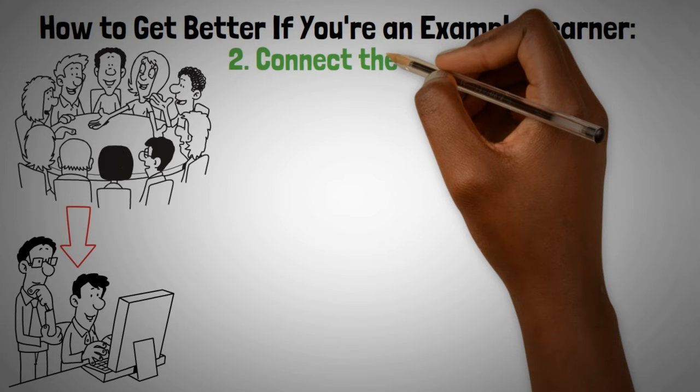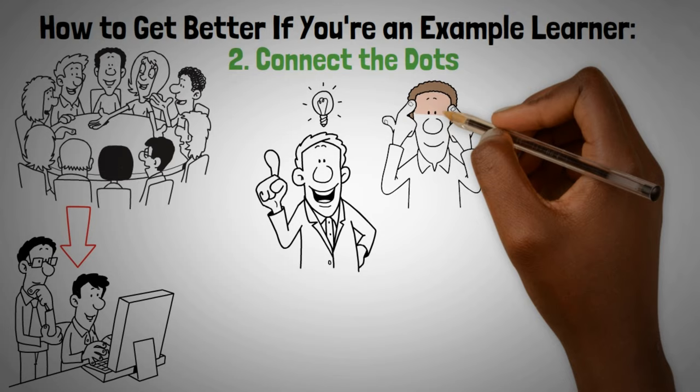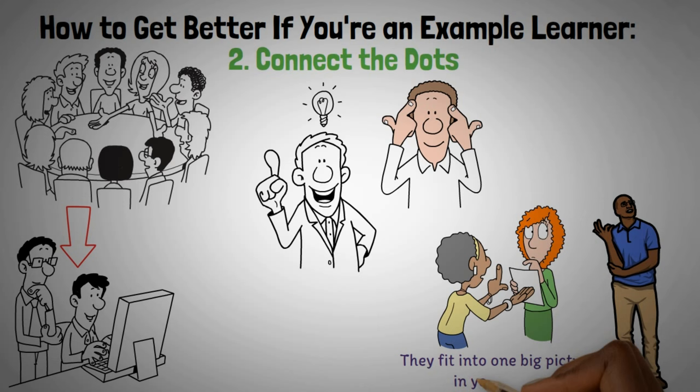Second step, connect the dots. Once you know the rules, link them with things you already know. This makes everything make more sense and helps you remember better. After that, you build mental models. This means putting together all the things you're learning so they fit into one big picture in your mind.